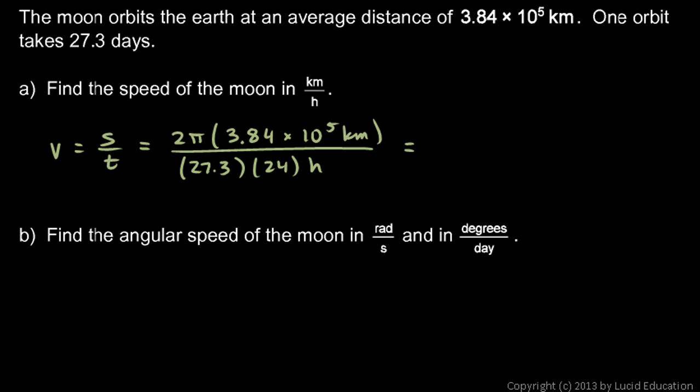That's not too hard to set up. We multiply and divide, and we get 3,680 kilometers per hour.